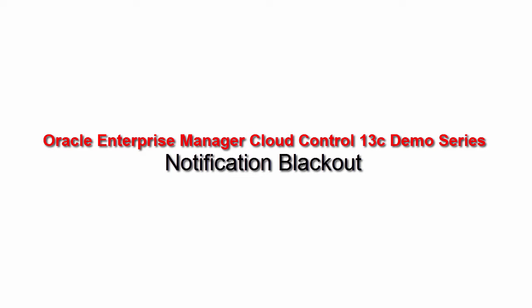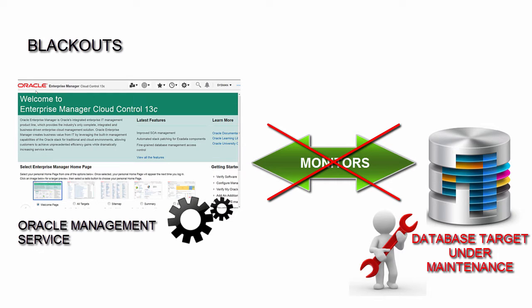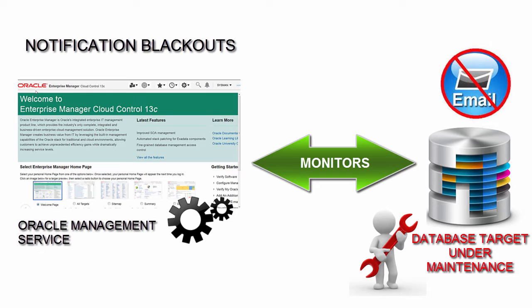Welcome. This screencast is part of Oracle Enterprise Manager Cloud Control 13C demo series and helps you understand and configure notification blackouts. Unlike regular blackouts that suspend monitoring on targets to perform maintenance operations, notification blackouts are solely for suppressing notifications on a target while the agent continues to monitor it. OMS shows the actual target status along with an indication that the target is currently under notification blackout. Events will be generated as usual but notifications are suppressed. This feature allows you to have monitoring visibility on a target under a maintenance period.